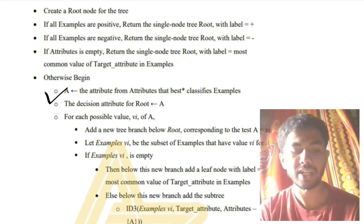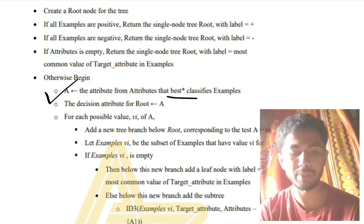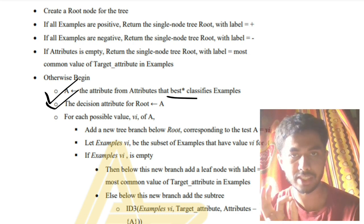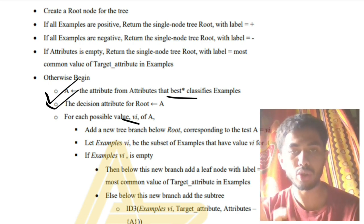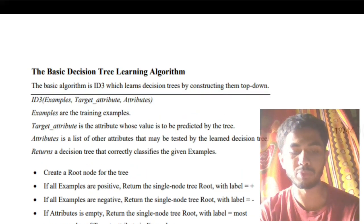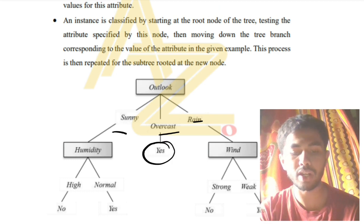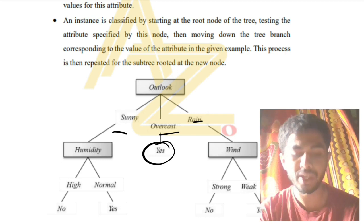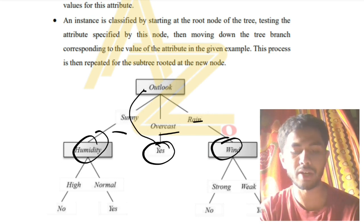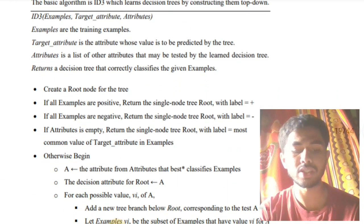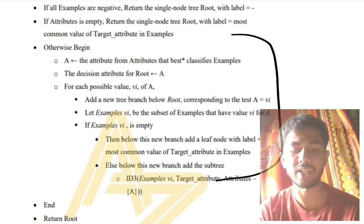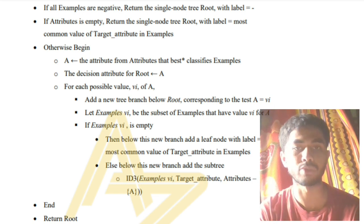If those three base cases are not met — meaning it's a mixture of positive and negative examples — then: select an attribute A from the list that best classifies the examples; set the decision tree root node to A; for each value of A (sunny, overcast, rain in this case), check if examples classify correctly. If not, recursively call the same function on the subsets until you find either yes or no for each case. That's how the decision tree algorithm works. It's a super important question from the exam point of view.